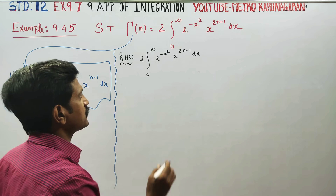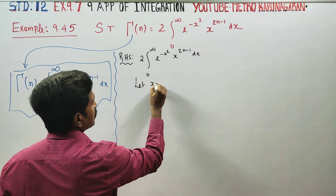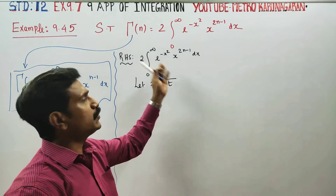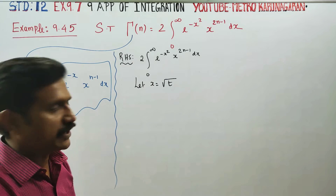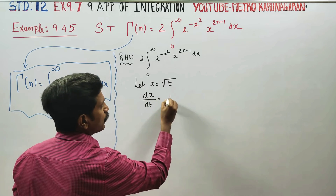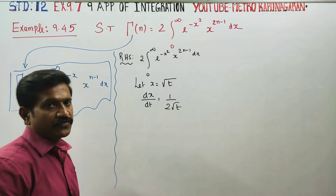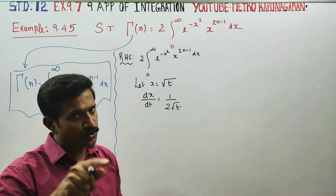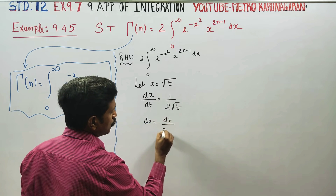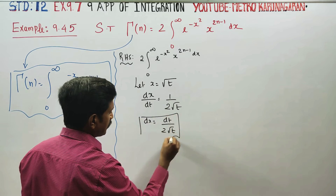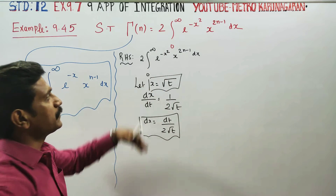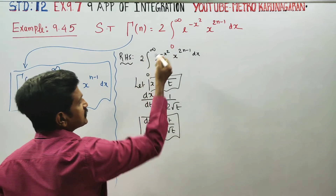Use the substitution method. Let x be equal to root t. Using this substitution, differentiate with respect to t: dx by dt equals 1 by 2 root t — this is the differentiation of root t. Cross multiply: dx is equal to dt by 2 root t.